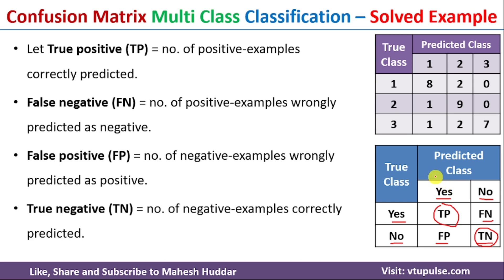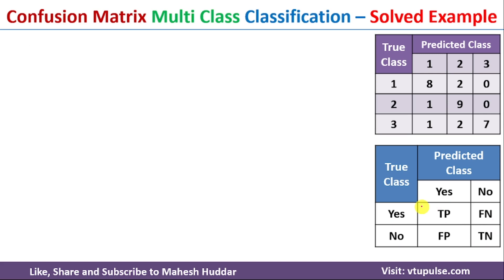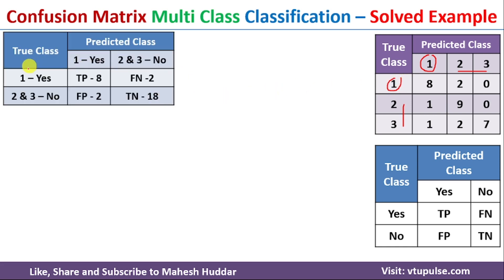The question is how to convert this multi-class classification confusion matrix into a binary classification confusion matrix. What we need to do is first consider class 1 as the 'yes' examples, and the remaining classes — class 2 and class 3 — will be considered as 'no' examples, giving us only two classes: class 1 as 'yes' and classes 2 and 3 as 'no'.